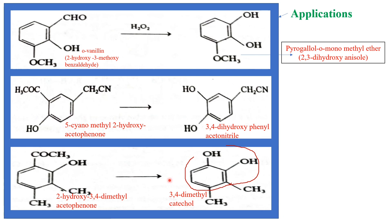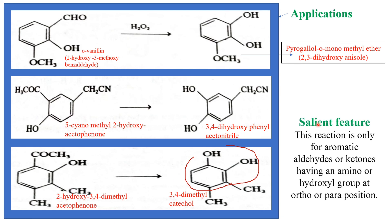These are the applications of the Dakin reaction. Now the salient feature: this reaction is only for aromatic aldehydes or ketones having an amino group or hydroxy group in the ortho or para position. If these groups are not present, it will not undergo the Dakin reaction. That is all about the Dakin reaction. Next class we will see another naming reaction. Thank you.